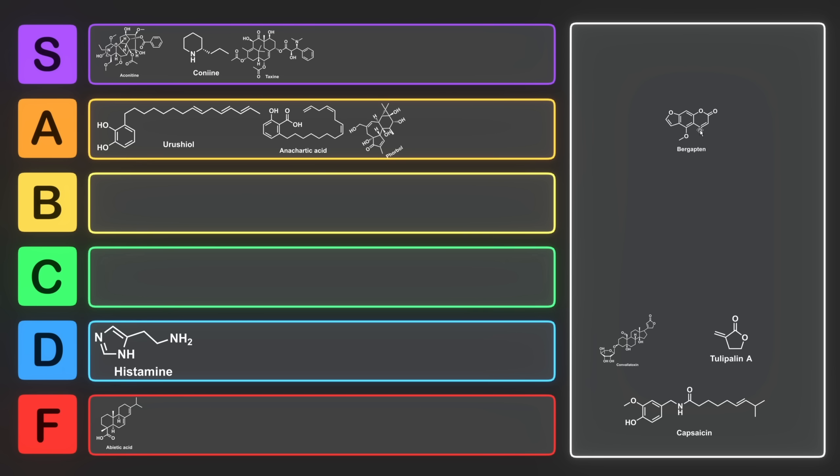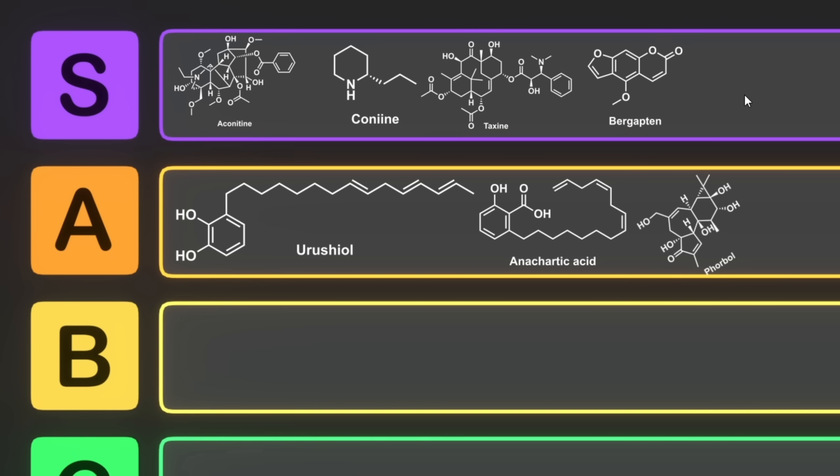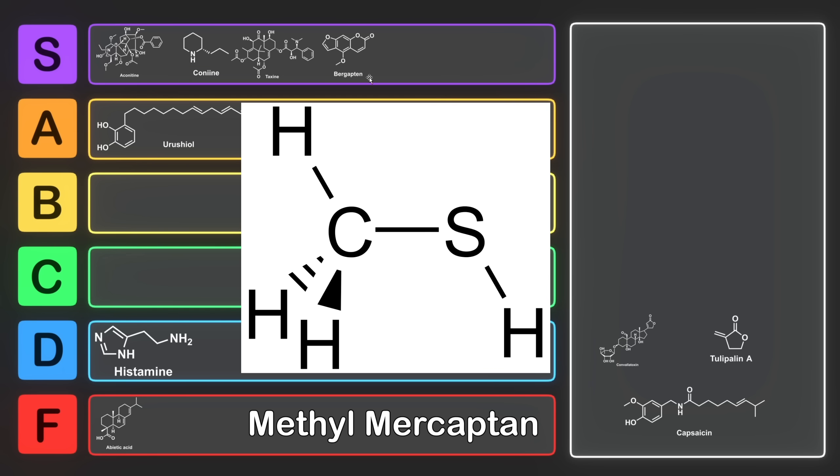Bergapten, you're giving people cancer, and you have your own disease named after yourself. That's pretty irritating. Bergapten, you can go right into A tier. Plus, you rhyme with mercaptan, and mercaptan stinks, so this definitely belongs in S tier.